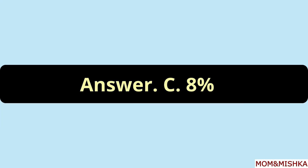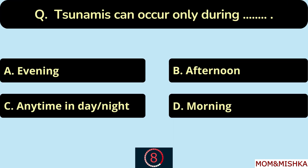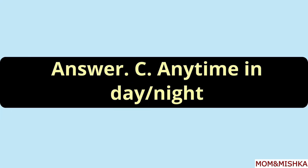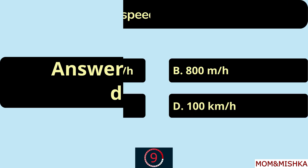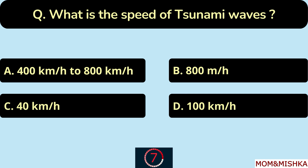Earthquakes and tsunamis constitute a disaster percentage of 8% — option C. Tsunamis can occur only during... they can occur anytime, day or night — option C. What is the speed of tsunami waves?